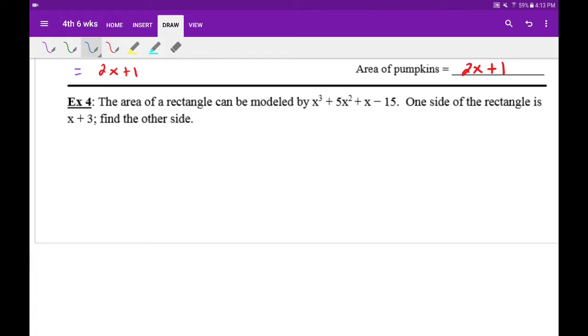I'm going to draw a little picture of what this means. So rectangle, and we have an area which is modeled by x cubed plus 5x squared plus x minus 15. That's the area. And they give us one of the sides. Let's just say this side, x plus 3.